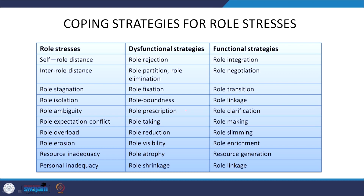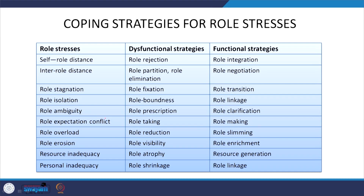Role isolation involves role boundness (dysfunctional: 'I will do only this much') and role linkage (functional: connecting one's role to another's). Role ambiguity means being unsure which role is better; the dysfunctional strategy is role prescription while the functional strategy is role clarification. Role expectation conflict — when expected outcomes from a role are not received — is addressed by role taking and role making.